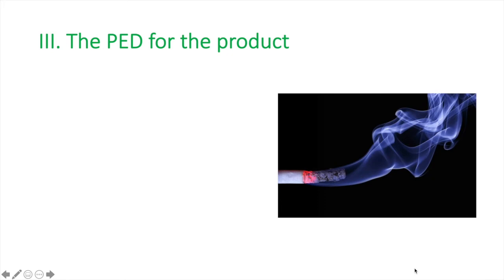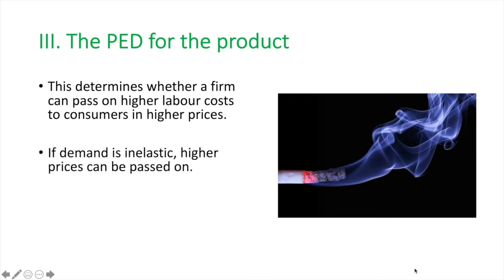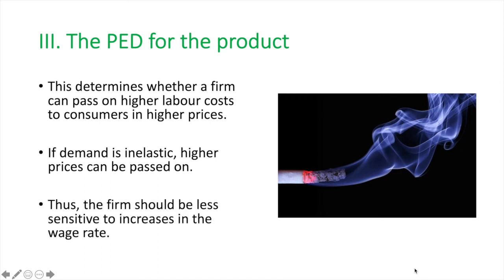Third is the elasticity of demand for the final product. This determines whether a firm can pass on higher labour costs to consumers in higher prices. If demand is inelastic, higher prices can be passed on to consumers, and thus the firm should be less sensitive to increases in the wage rate. The inverse is true as well. If the demand for a product is elastic and consumers are sensitive to price changes, then the firm is more likely to be sensitive to increases in their costs, which in this instance is the wage rate. The firm would not be so easily able to pass the higher prices on to consumers.